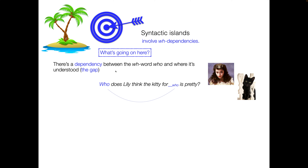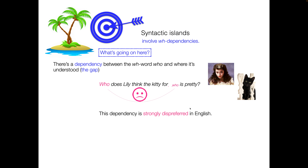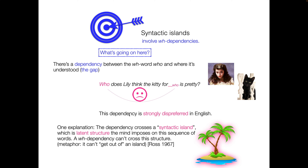What's going on here? The idea is that there is in fact a dependency — a relationship between the WH-word 'who' and where it's understood, which is the gap. So 'Who does Lily think the kitty for is pretty?' — we don't like that one. In particular, this dependency is strongly dispreferred in English. One explanation is that this dependency crosses something lovingly known as a syntactic island — basically latent structure that the mind imposes on the sequence of words — and a WH-dependency can't cross this latent structure.